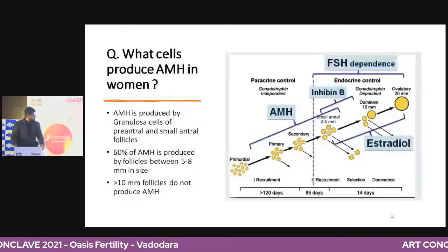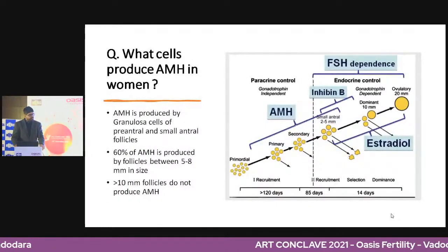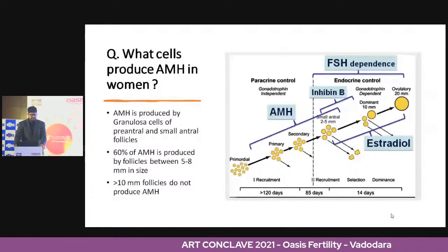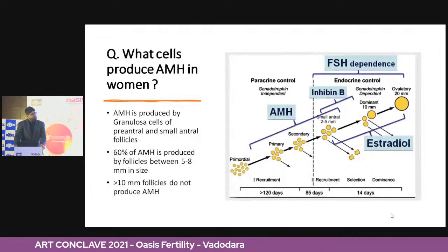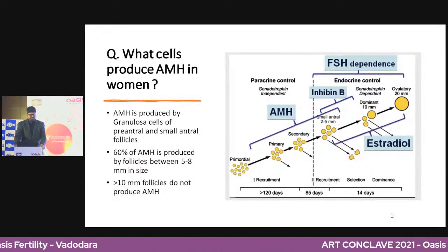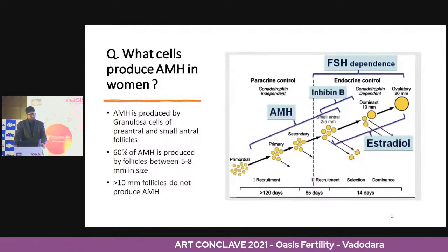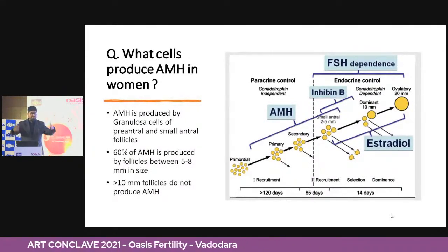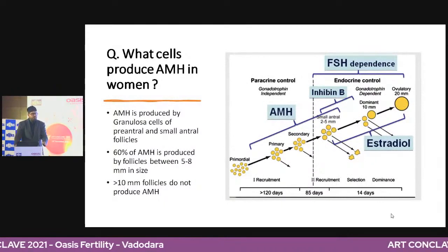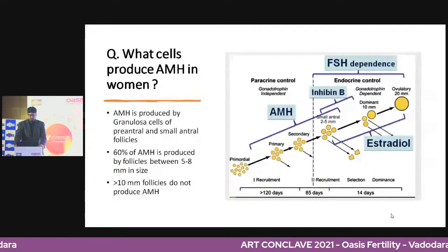AMH in women is produced by the granulosa cells of pre-antral and small antral follicles. Sixty percent is produced by follicles between 5 to 8 mm in size — that's the critical period. Follicles more than 10 mm do not produce AMH. As follicles evolve, AMH production starts reducing, coming mainly from the early small pre-antral and antral follicles.